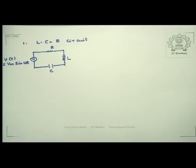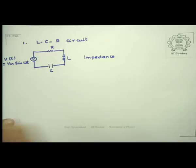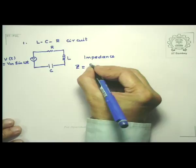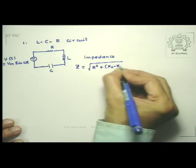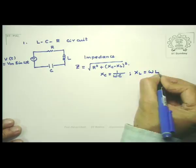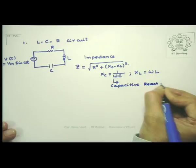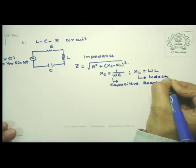We have seen that what the role resistance played in DC circuits is defined to be impedance, which depends on the values of R, L, and C, and is usually denoted by Z, which is given by √(R² + (Xc − XL)²). We have seen that Xc is given by 1/(ωC) — that is capacitive reactance — and XL = ωL is inductive reactance.